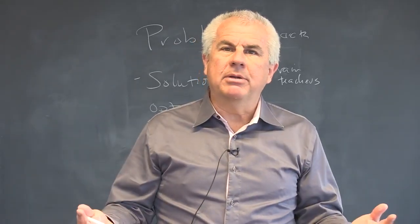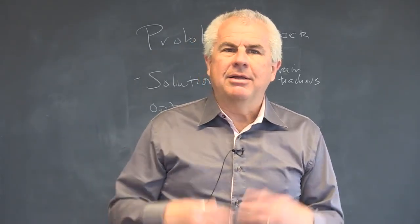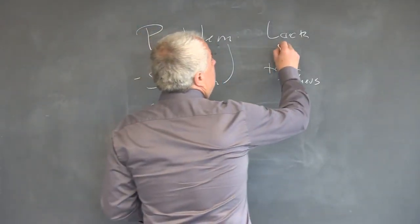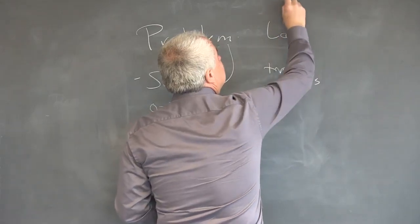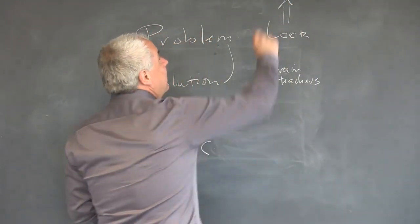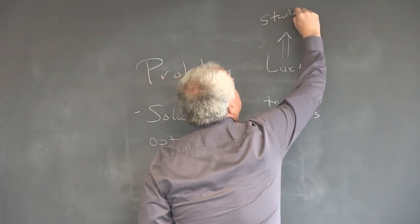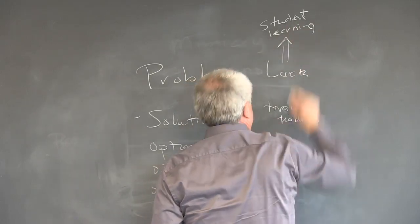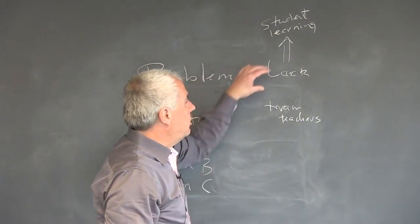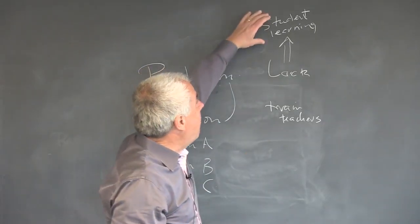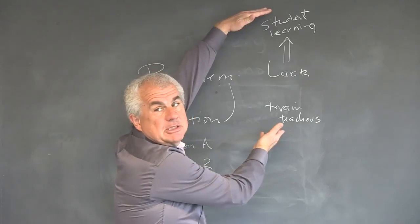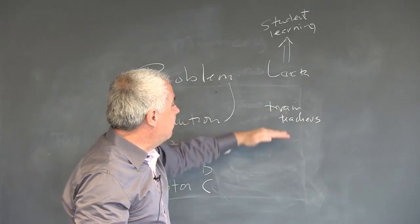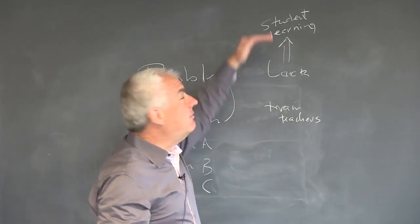Which means you're really not open to anything other than business as usual. Now, if we said wait a second, you really had a deeper problem hiding somewhere — which is inadequate student learning. The reason you wanted trained teachers was that you weren't getting the student learning you thought you could get. Now I've pushed my problem away from my solution, so if I frame the problem as lack of student learning, I can have lots of different ways of imagining solving this problem.